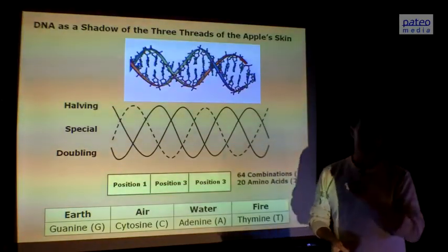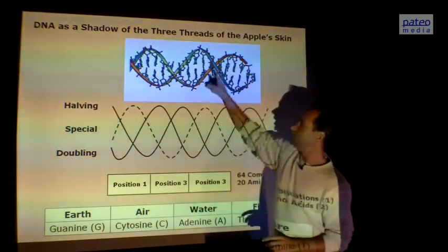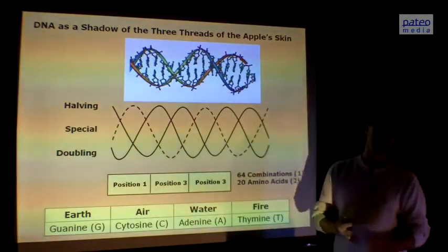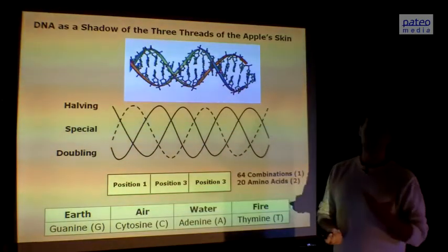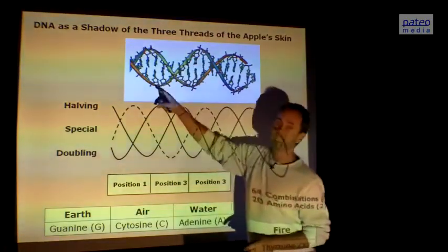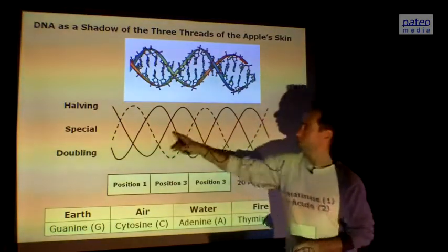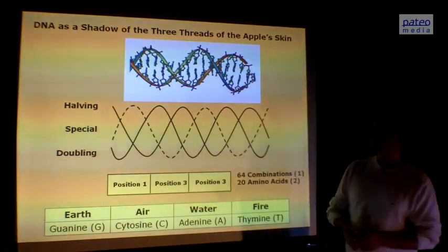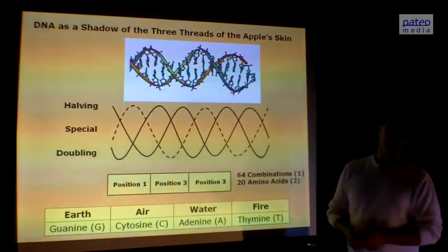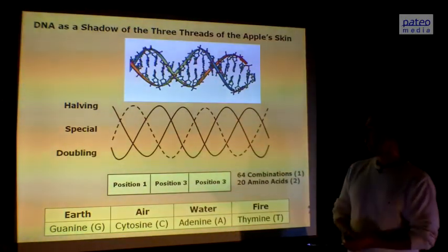We also see these three different threads in our DNA. We can only see two DNAs because the shadow of the special one is not visible in our world. There's no matter connected to it, but of course energetically it is there. And if you see carefully, there is a third helix missing. There is space exactly for a third helix. So that means that there are three threads in fact in our DNA, which is exactly the same as the three threads of the skin of the apple.